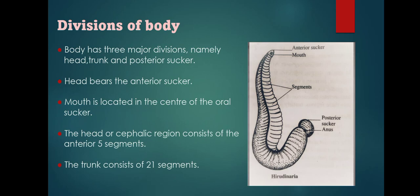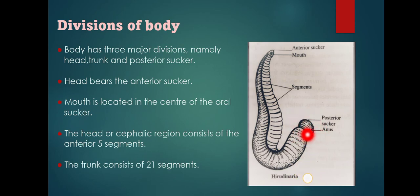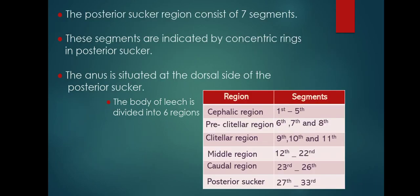The body has three major divisions: head, trunk, and posterior sucker. The head region contains the anterior sucker, with the mouth located in the center of the oral sucker. The cephalic region consists of the anterior five segments, the trunk consists of 21 segments, and the posterior sucker region consists of seven segments, indicated by concentric rings.